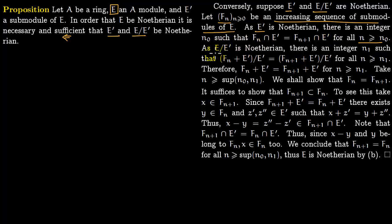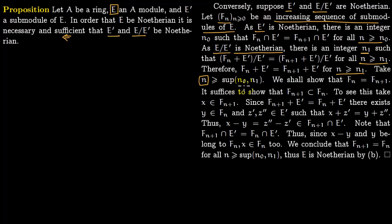Since E prime is Noetherian, there exists an integer n0 such that for n greater or equal to n0, Fn intersection with E prime equals Fn+1 intersection with E prime — this sequence stabilizes. Similarly, since E over E prime is Noetherian, there exists an integer n1 such that for n greater or equal to n1, Fn plus E prime over E prime equals Fn+1 plus E prime over E prime, which means Fn plus E prime equals Fn+1 plus E prime.